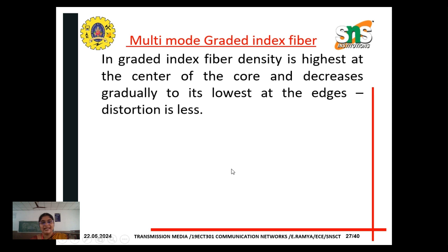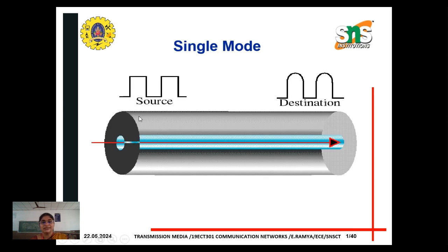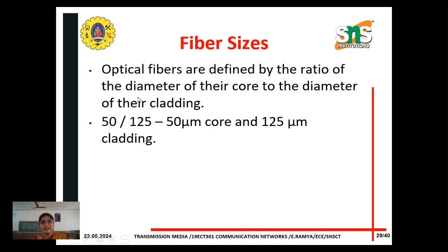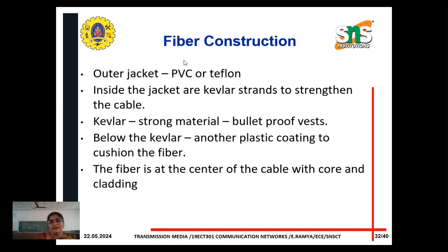Multi-mode graded index fiber has a source and destination, and two lines of communication occur. In single mode, only one single path is used. Optical fibers are defined by the ratio of the diameter of the core to the diameter of the cladding — for example, 50 by 125 micrometers. Fiber construction consists of an outer jacket, a buffer, and then the fiber. The outer jacket is typically PVC.